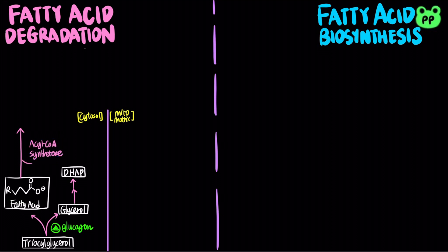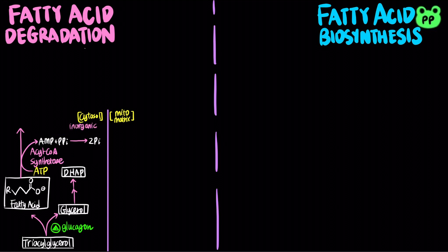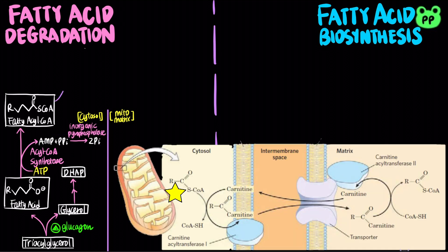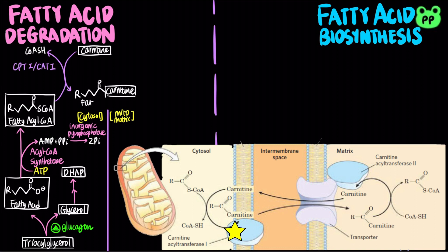This reaction is coupled to the hydrolysis of two high-energy bonds in ATP, producing AMP and inorganic pyrophosphate, which is immediately hydrolyzed by inorganic pyrophosphatase. Fatty acids then attach to the hydroxyl group of carnitine to form fatty acyl-carnitine, catalyzed by carnitine palmitoyltransferase-1, also known as carnitine acyl-transferase-1, found on the outer mitochondrial membrane, abbreviated as CPT1 or CAT1.